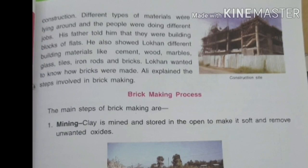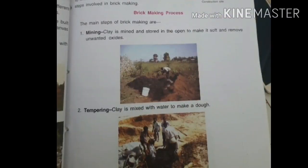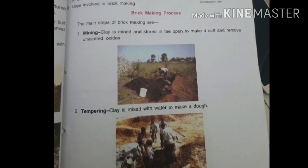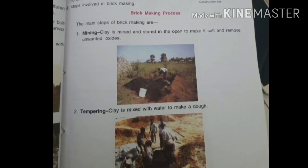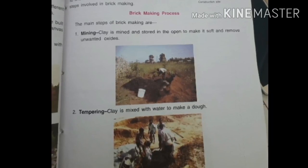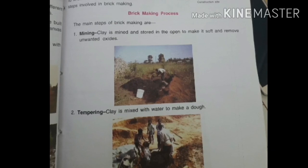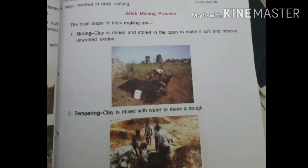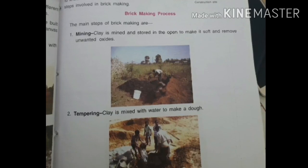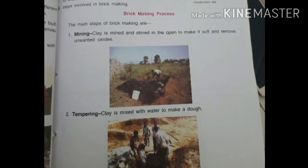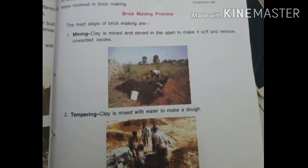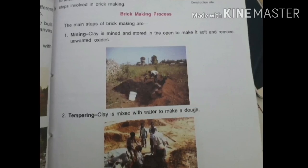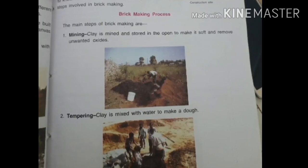There are five main steps of brick making: mining, tempering, molding, drying and firing. Now let us learn them in detail. The first step is mining — clay soil is mined and stored in the open to make it soft, and all unwanted oxides are removed from it.